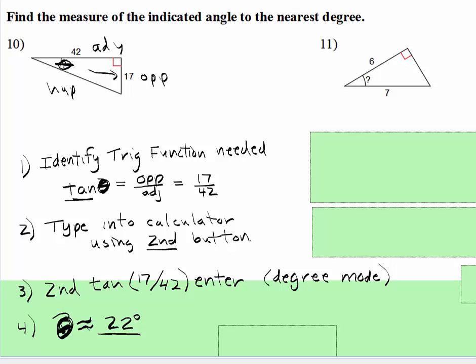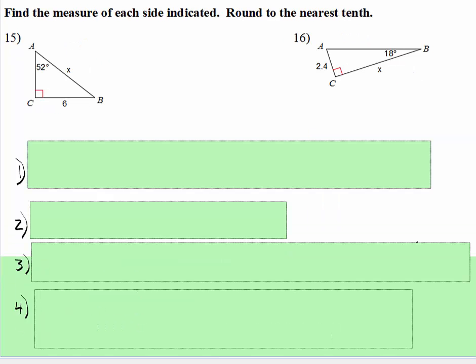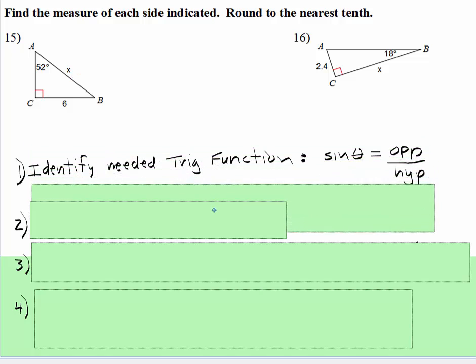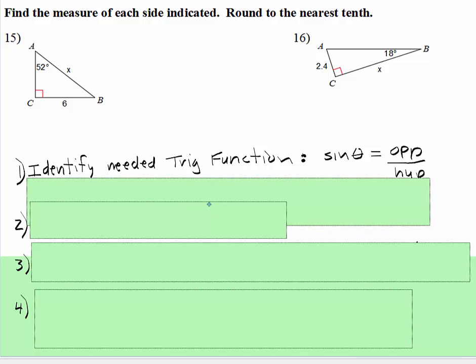Notice I put the wavy. Okay, and then find the measure of each side indicated. I'll go ahead and just stay with this. So we have the angle, now we need to find the side. So again, identify the needed trig function.